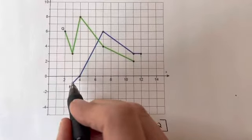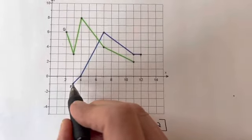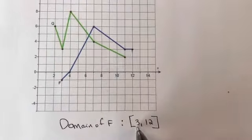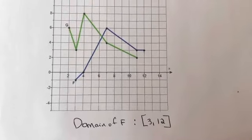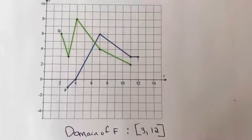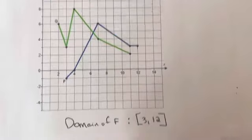Now let me just say, if this was an open point right here instead of a closed point, it would be a parenthesis. The parenthesis tells you that you can use everything up to really close to 3, but just not 3. But these are all closed, so we're good.